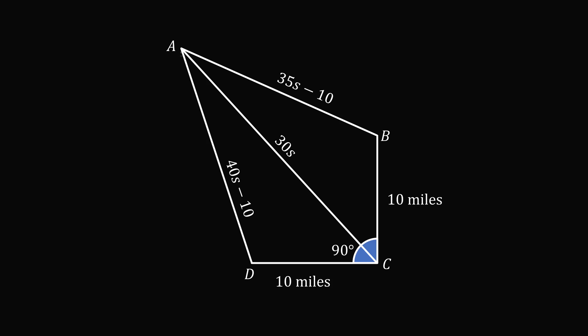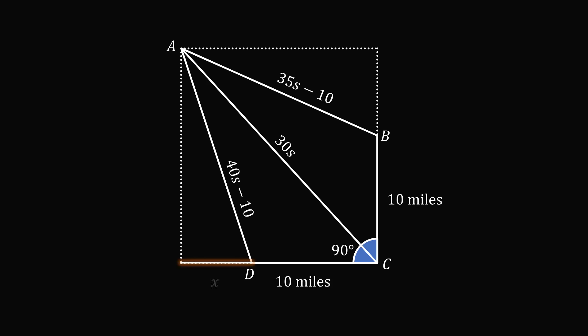To get started, construct the vertical and horizontal lengths going from point A to point D, and do the same from point A to point B. We have now constructed a rectangle encapsulating the diagram. Suppose the horizontal distance from A to D is equal to X, and the entire horizontal length from A to C is X plus 10. Suppose the vertical distance from B to A is equal to Y, so the entire vertical distance from A to C is Y plus 10. We now have a diagram with many right triangles.